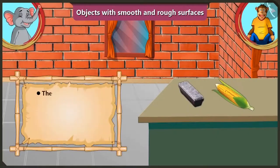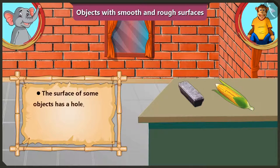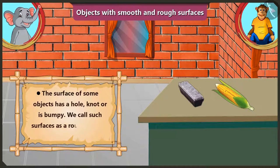Appu, when the surface of an object has a hole, knot, or if it is bumpy, we call that surface a rough surface. Which means the surface is rough and our hand cannot slide on it easily.